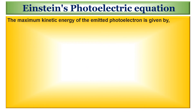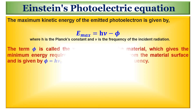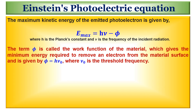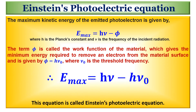The maximum kinetic energy of the emitted photoelectron is given by the equation where H is Planck's constant and nu is the frequency of the incident radiation. The term phi is called the work function of the material, which gives the minimum energy required to remove an electron from the material surface and is given by phi equals H times nu0, where nu0 is the threshold frequency. The maximum kinetic energy of the ejected electron then becomes KE_max = H*nu - phi. This equation is called Einstein's photoelectric equation.